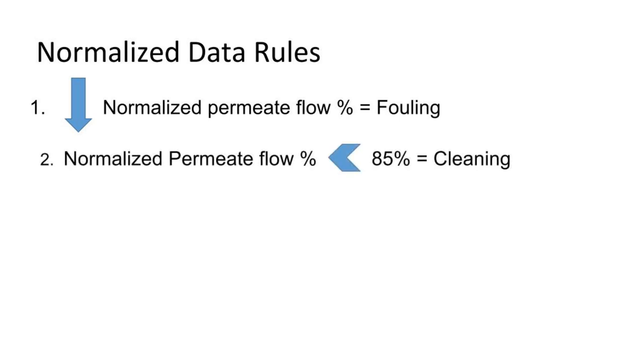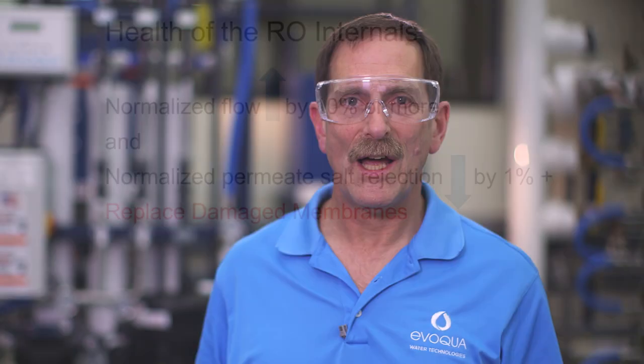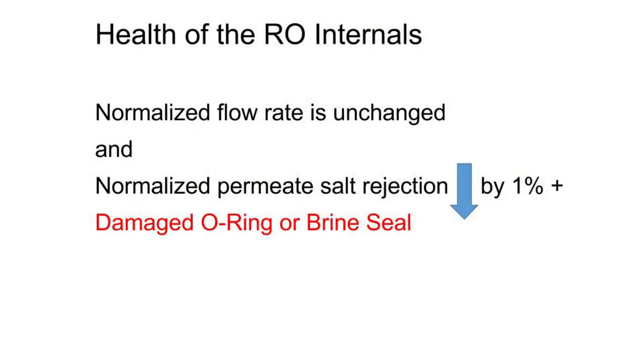If normalized permeate flow percent is less than 85%, the RO membranes should be cleaned. A combination of higher normalized permeate flow percent and lower normalized rejection percent indicates RO membrane damage. If normalized permeate flow percent is greater than 110 and normalized rejection percent decreases more than 1%, the RO membranes are damaged and should be replaced. If the normalized permeate flow percent is relatively unchanged and the normalized rejection percent decreases more than 1%, additional troubleshooting is needed to determine which O-rings are damaged.